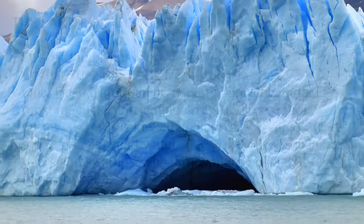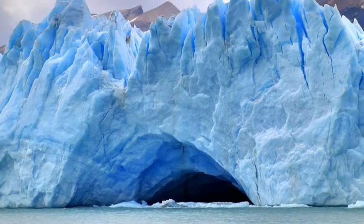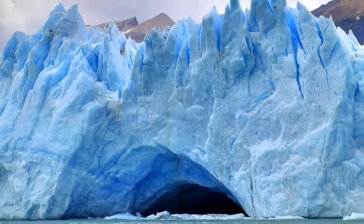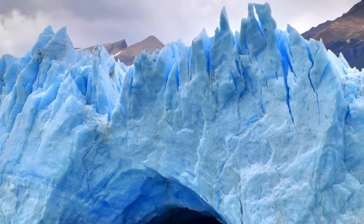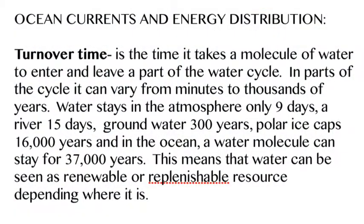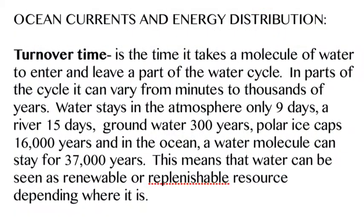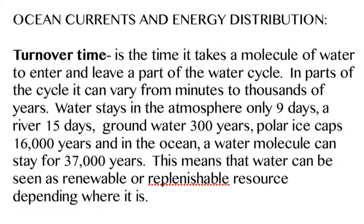Now, of that 3% freshwater: 69% of it is locked up as ice, 30% is locked up underground, and about 3% of it is in rivers and lakes.